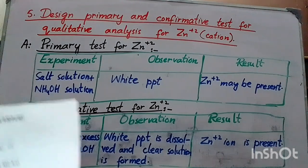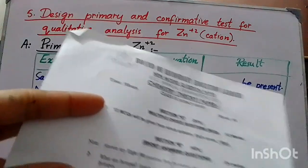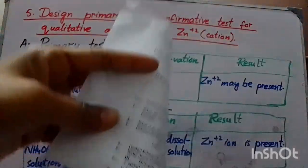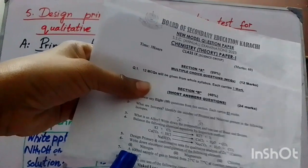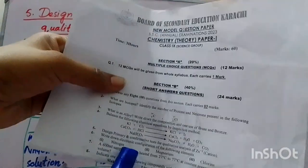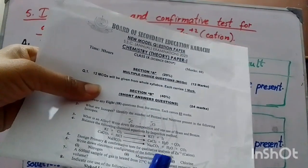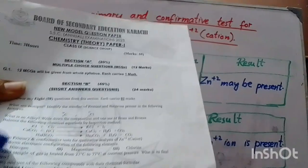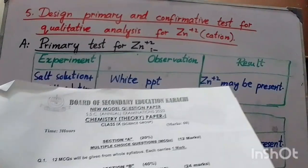Assalamualaikum. In my last lecture, I solved question number 2 and question number 4, and explained question number 5. Today, I will explain question number 5. You can see the model paper and design the primary and confirmative test for qualitative analysis of Zn²⁺. I will solve this question and understand what these tests are.